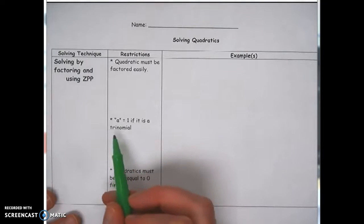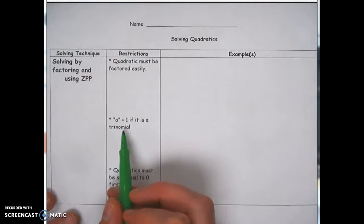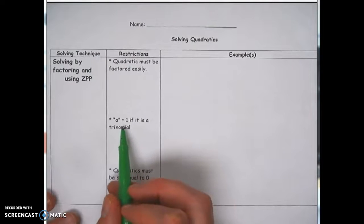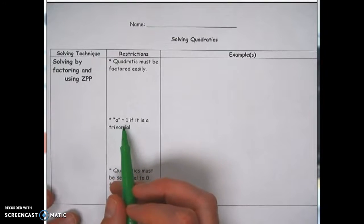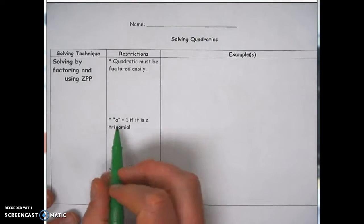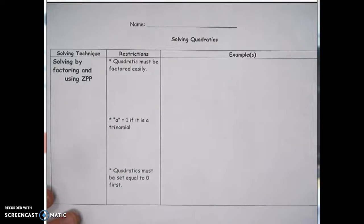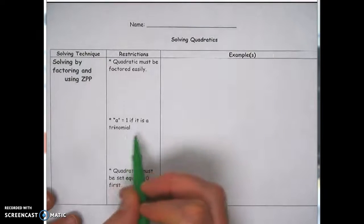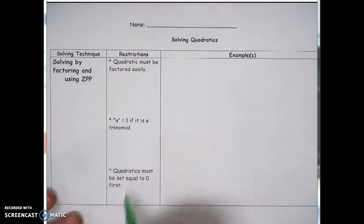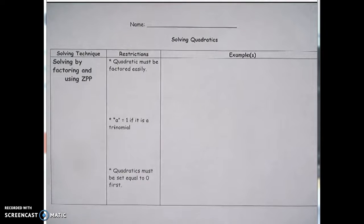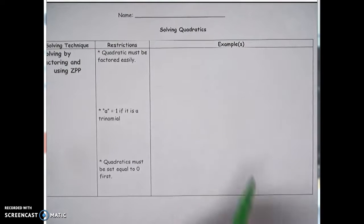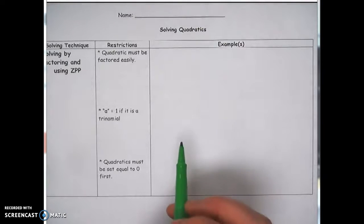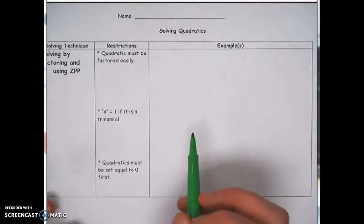Also, if we're factoring and it's a trinomial, it's easiest if that first number is 1x² or just a plain x². You certainly can factor it if a is not equal to 1, but it's much easier to use other methods if it's not. So we want a plain x². And the quadratic must be set equal to zero before we start. We're going to look at some examples.